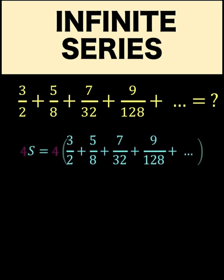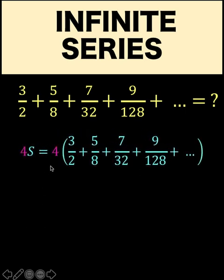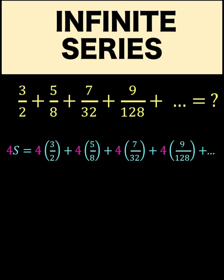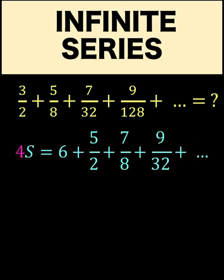And so, at the left, we have 4 times S. At the right, we multiply this expression by 4. And then, let's distribute 4 to each of these terms this way. And simplifying, 4 times 3 halves is 6. 4 times 5 over 8 is 5 halves and so on. And so, we arrive at this equation.